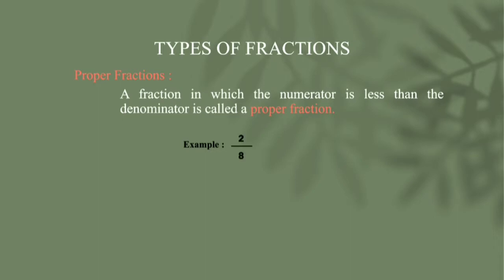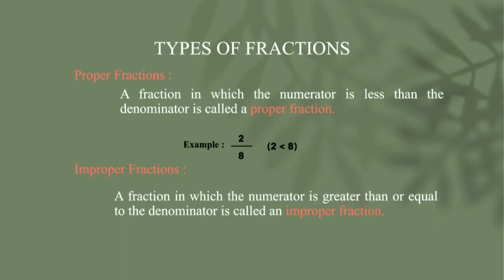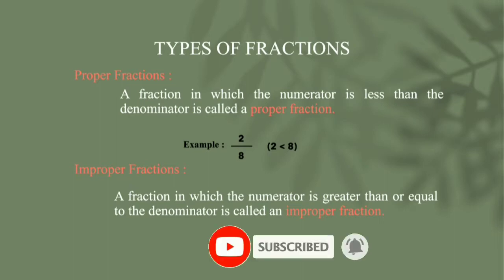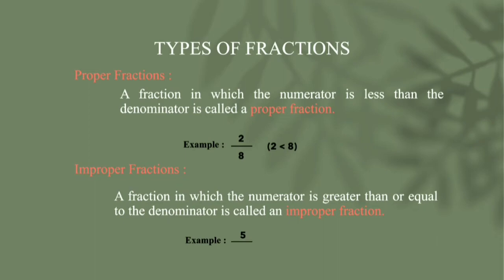The next one is improper fraction. A fraction in which the numerator is greater than or equal to the denominator is called an improper fraction. For example, 5 is greater than 2, so we can denote it as 5 by 2.